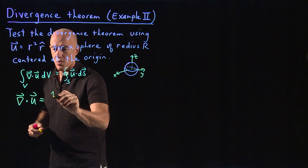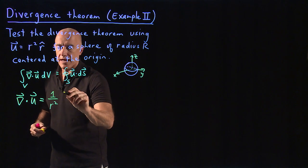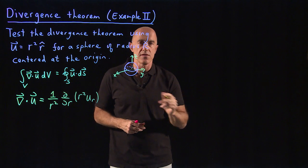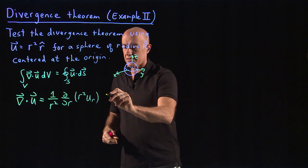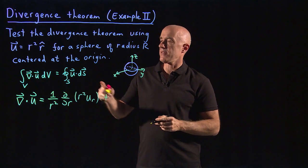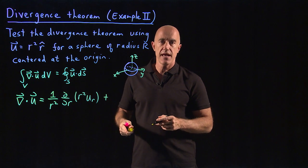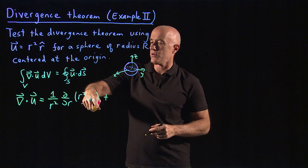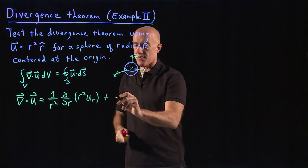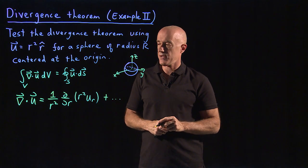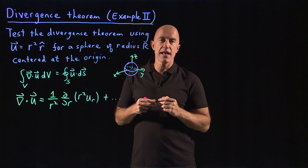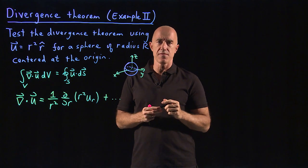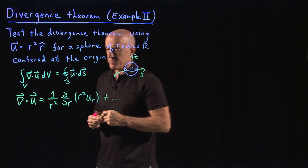The divergence of u in spherical coordinates: the first term is 1 over r squared times d/dr of r squared u sub r. That's the component of u in the r hat direction, plus other terms that depend on the theta and phi hat directions. But there is no component of u in those directions, so all these other terms are zero. That's typically what happens when you're working a problem in spherical coordinates—you usually have some type of symmetry associated with the sphere.